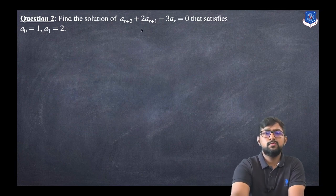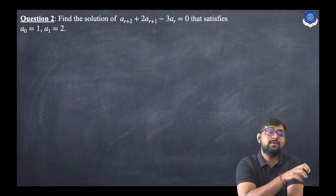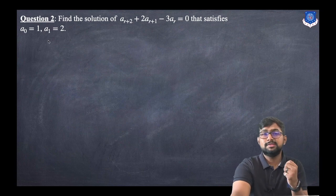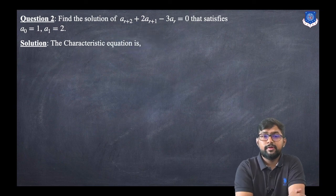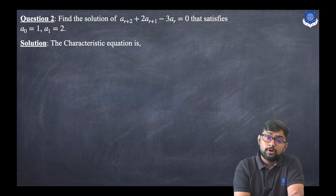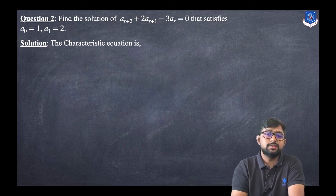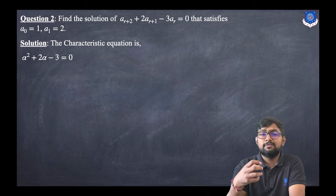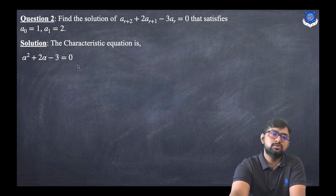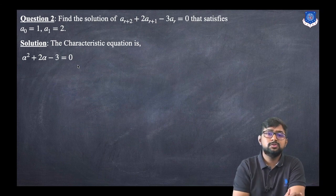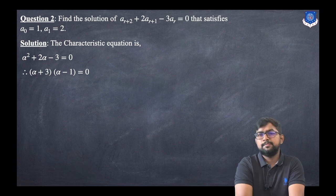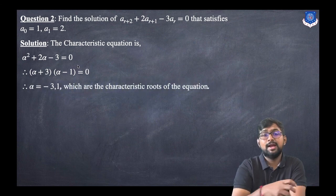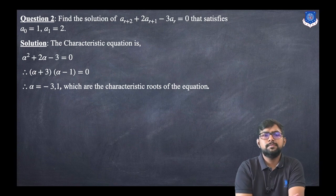Now find the solution of a_{r+2} + 2 * a_{r+1} - 3 * a_r = 0, satisfying a_0 = 1 and a_1 = 2. The right-hand side is 0, so it is homogeneous. The order is 2, so the characteristic equation is: α^2 + 2α - 3 = 0. Factoring gives (α + 3)(α - 1) = 0, so α = -3 or α = 1, which are the distinct characteristic roots.